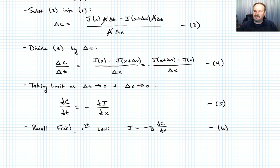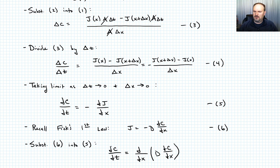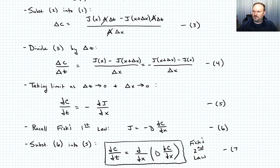Substituting Equation 6 into Equation 5, the negatives cancel, and we end up with: del C over del t equals del/del x of D times del C over del x. That is Fick's Second Law — Equation 7. This tells us how fast the concentration at any location changes based on the spatial distribution of concentration — specifically, the curvature of the concentration profile.